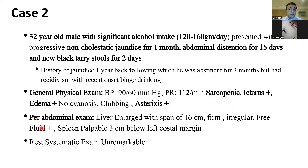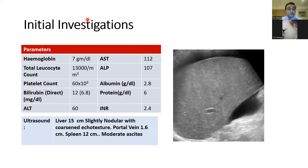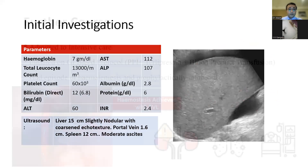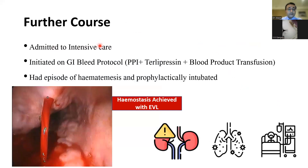Per-abdominal examination shows an enlarged liver of 16 cm — firm, irregular — with shifting dullness. The spleen is also palpable. His initial investigations show anemia, leukocytosis, and thrombocytopenia. His liver is failing: bilirubin 12, INR 2.4. Ultrasound shows a 15 cm nodular liver, portal vein of 1.6 cm, no thrombus, no cavernoma, spleen of 12 cm, and moderate ascites. As per protocol, he was admitted to intensive care, initiated on GI bleed protocol with PPIs, terlipressin, and blood product transfusion.